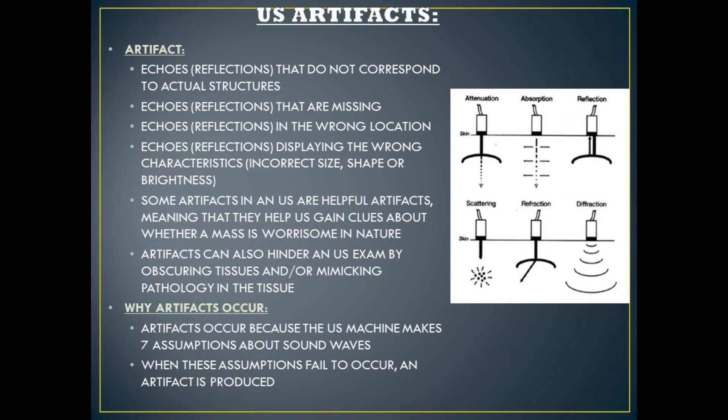Ultrasound artifacts are echoes or reflections that do not correspond to actual structures, or echoes that are missing on an image, or echoes that are in the wrong location, or echoes that are displaying the wrong characteristics such as incorrect size, shape, or brightness. Artifacts occur because the ultrasound machine makes seven assumptions about sound waves. When one or more of these assumptions fail to occur, an ultrasound artifact is produced.